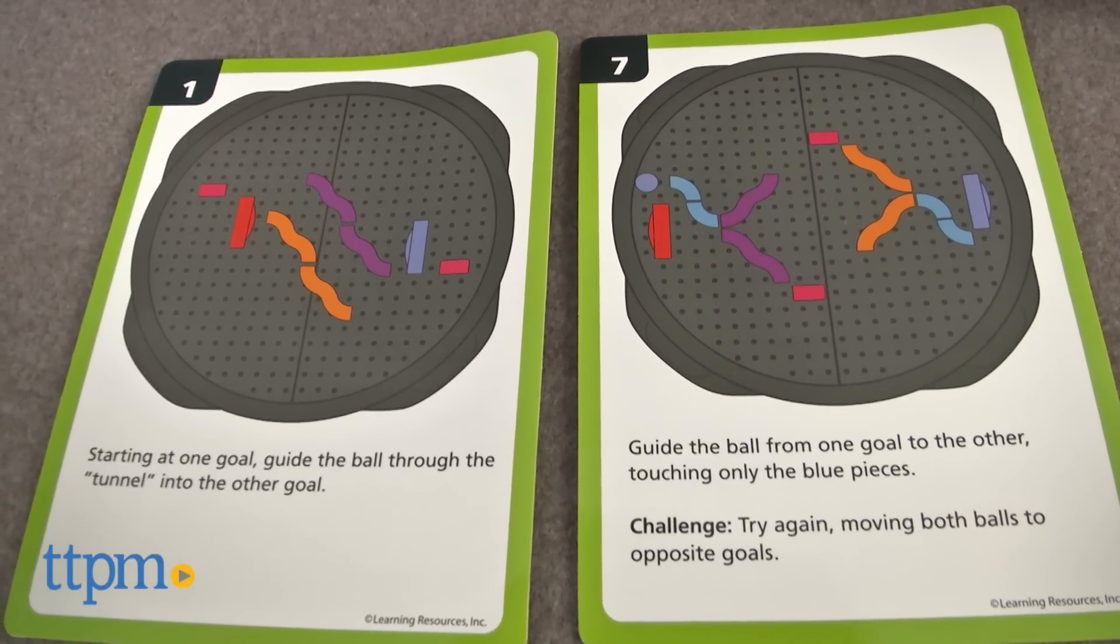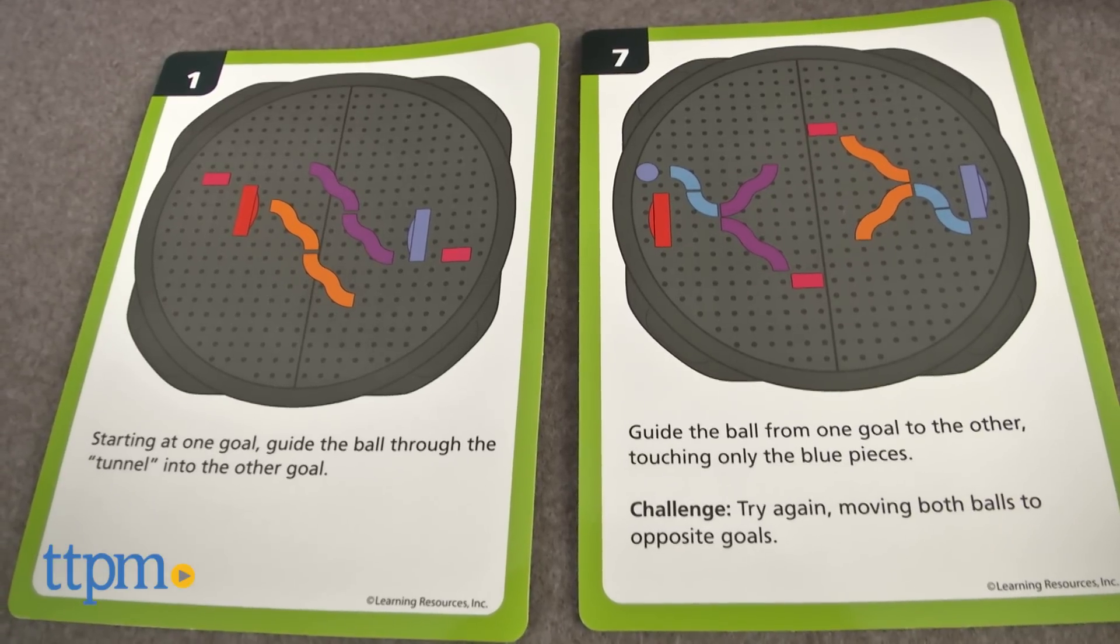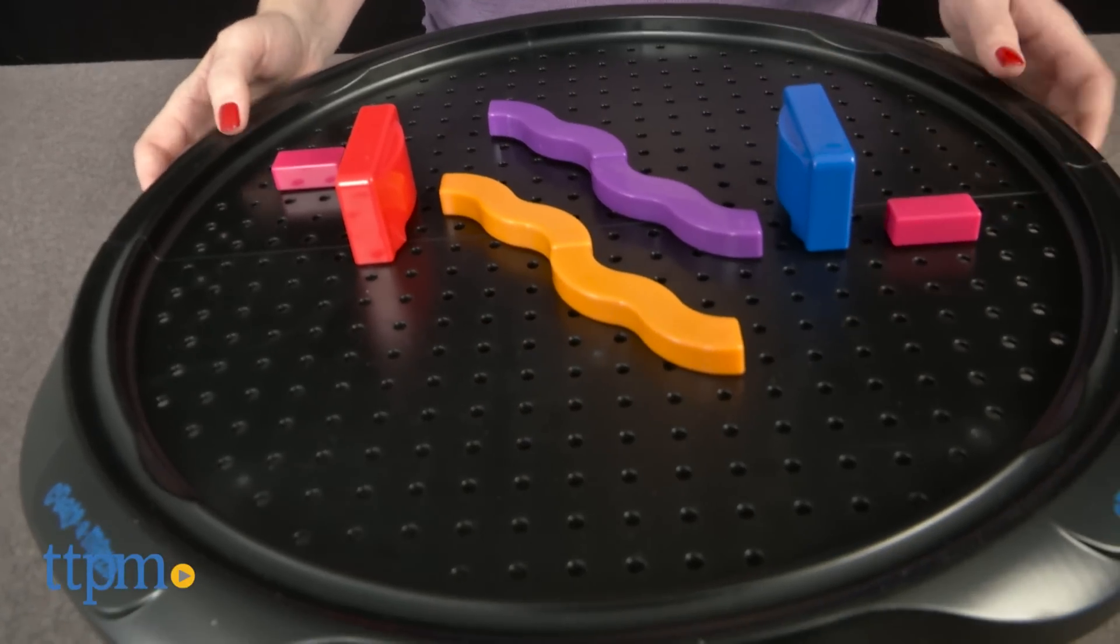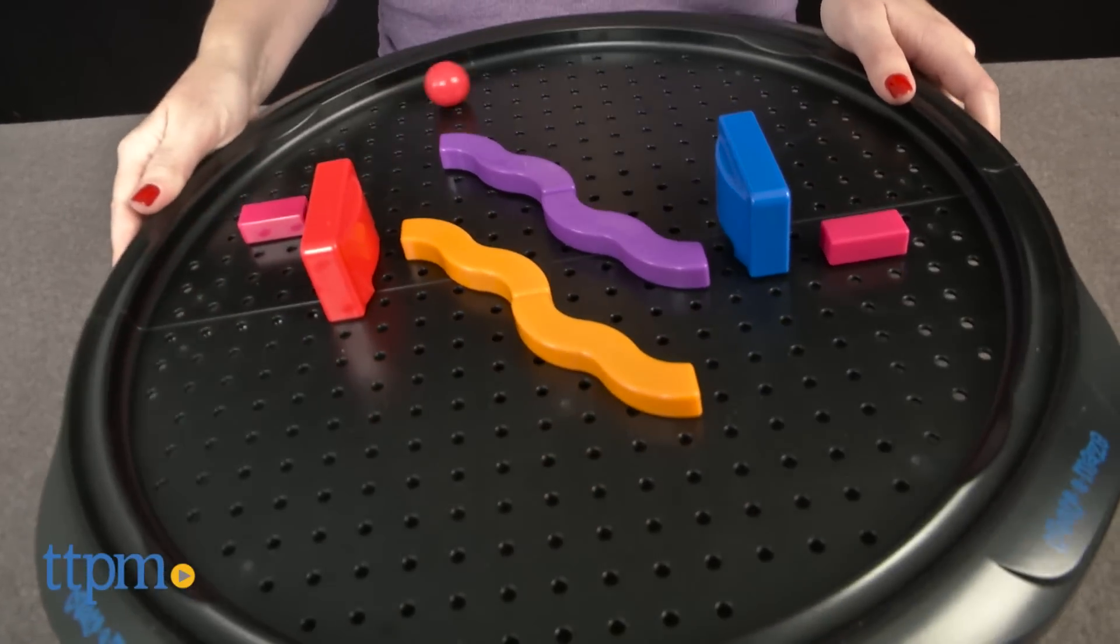Or the directions could be more challenging, such as guiding a ball to a goal but only touching blue pieces. Kids will have to move and tilt the game board in order to get the balls through the maze as indicated on the card.